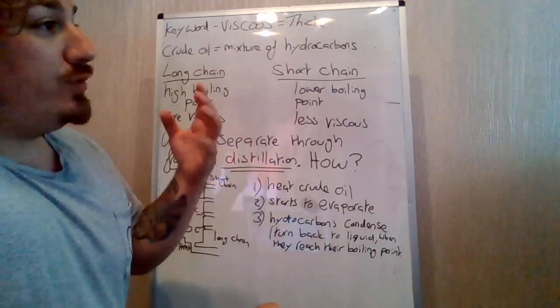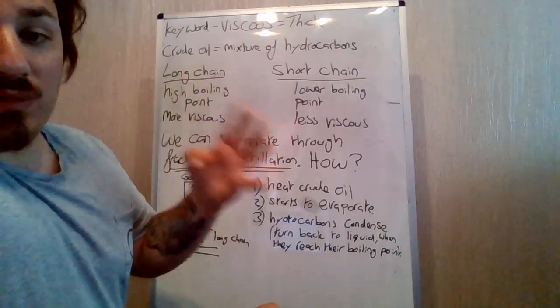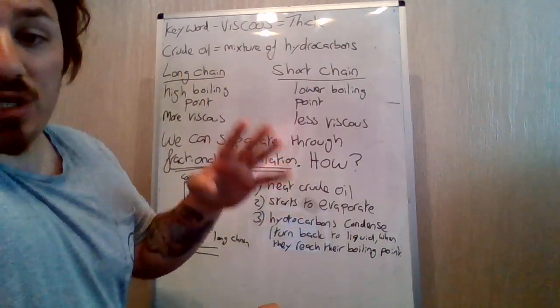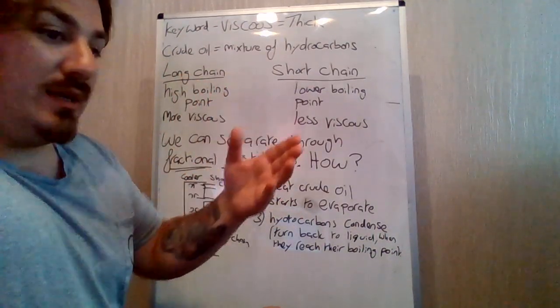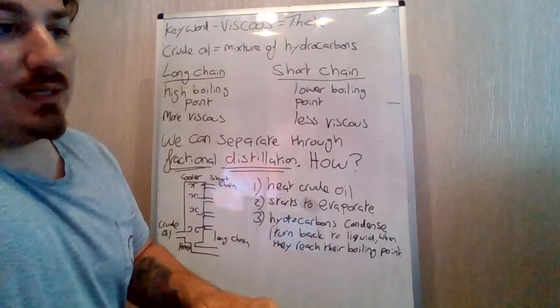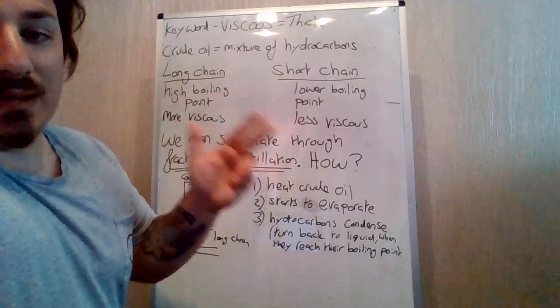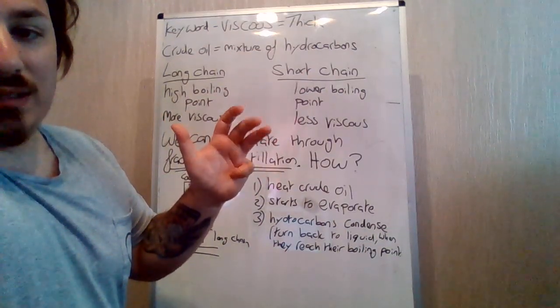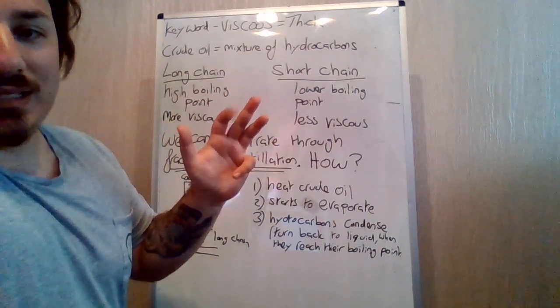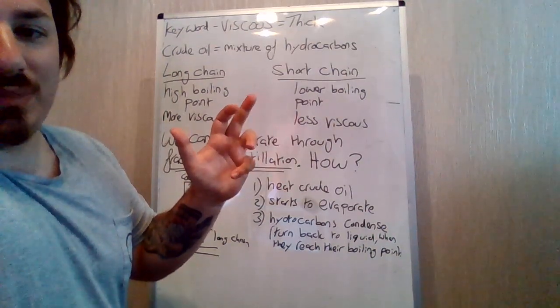Again, you've got to remember those four alkanes and alkenes. So alkanes, if you want to know, just go back to previous video, but we'll recap anyway. So alkanes, methane, ethane, propane, butane. Monkeys eat peanut butter.